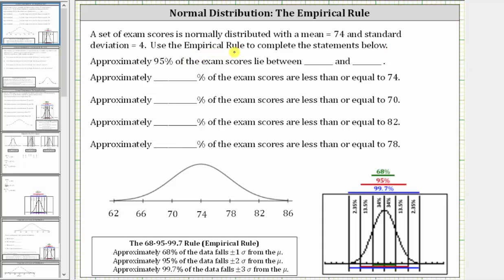A set of exam scores is normally distributed with a mean of 74 and a standard deviation of four. We're told to use the empirical rule to complete the statements below. Notice I've already set up the normal distribution curve below, where we have the mean of 74 at the center, and the horizontal axis is scaled by the standard deviation of four.